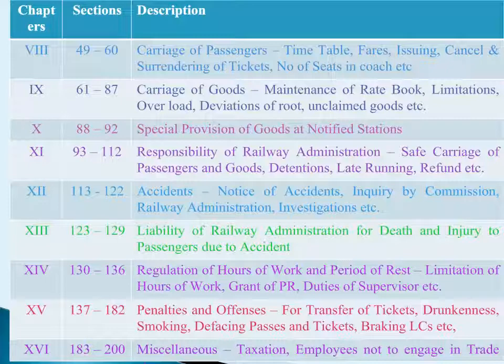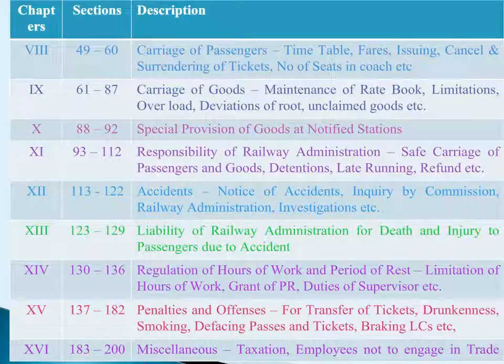Chapter 9: Carriage of Goods has twenty-seven sections, Sections 61 to 87. These sections cover conditions of receiving goods, provisions of risk rates, maintenance of rent books, carriage of dangerous goods, carriage of animals, deviation of routes, unclaimed consignments, etc.